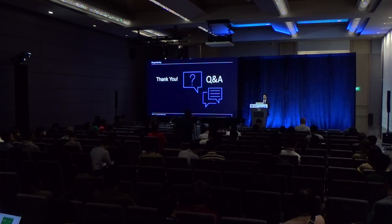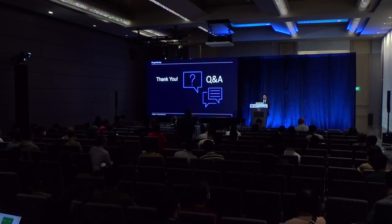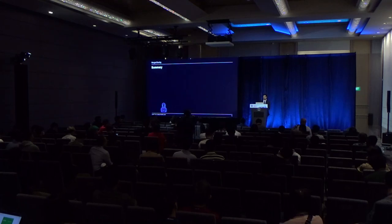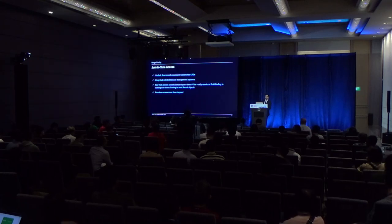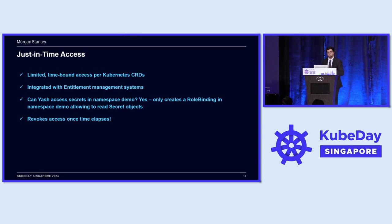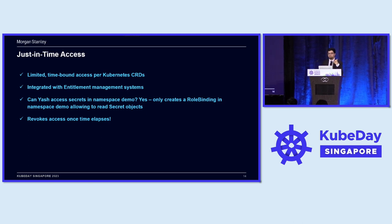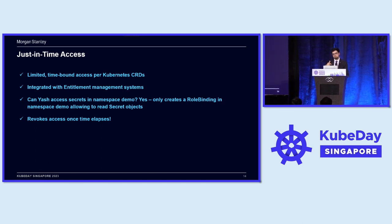Q: Great presentation. I had a question on the just-in-time access. How do you automate providing that access and who does the housekeeping of deleting access? A: That's integrated with our in-house entitlement management system. Each role binding is created with a timestamp, and when that timestamp elapses, the role binding is automatically cleaned up on the cluster by a custom controller we've built.